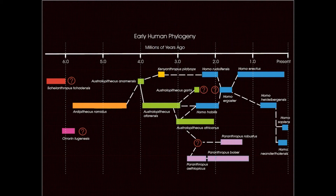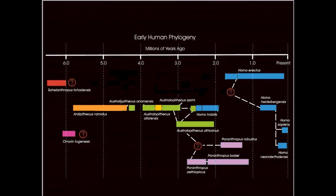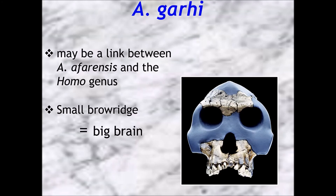Here's my modified phylogeny: Kenyanthropus platyops shifts down into Australopithecus afarensis, where I think she belongs. Rudolphensis gets pulled down into habilis, and ergaster gets pulled up into Homo erectus where it belongs. We'll talk about genus Homo in a following lecture, but for now the key point is: Kenyanthropus platyops is Australopithecus afarensis in my opinion.